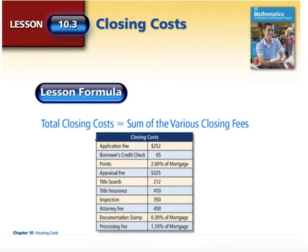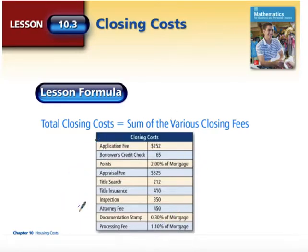To find our closing costs, we're just going to add everything together. Some of these costs are associated with a percentage of what you are actually going to mortgage. These are not universal — it depends on the bank and what you've negotiated with them as to which fees are going to actually be included in your closing costs. This is just a generic table that we're going to use throughout the lesson.